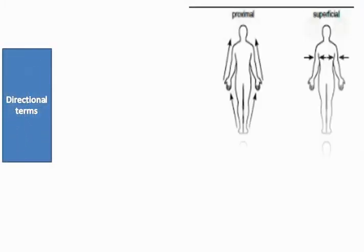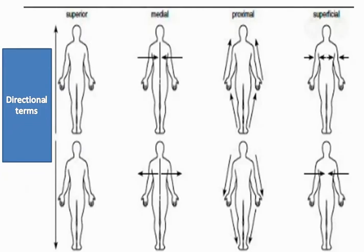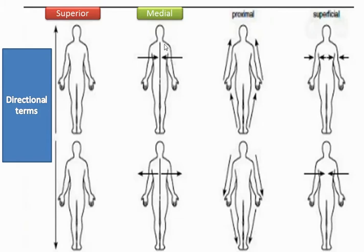In anatomy, we also have what we call directional terms. Each term is the opposite of another. We have superior, meaning upper, and inferior, meaning lower. We also have medial — this describes when we define which part of an organ is close to the midline. The part close to the midline is called the medial side. The opposite is lateral, which is far away from the midline.